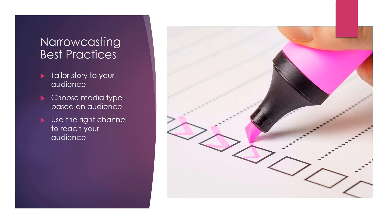A few tips and best practices on narrowcasting: tailor the story to your audience — that's the real power of narrowcasting — so make sure you're talking specifically to that audience. Choose your media type based on your audience: do they learn better from images, from video, from podcasting? Give some thought to what's the best way to reach them, and use the right channels to find how you're going to reach these people.